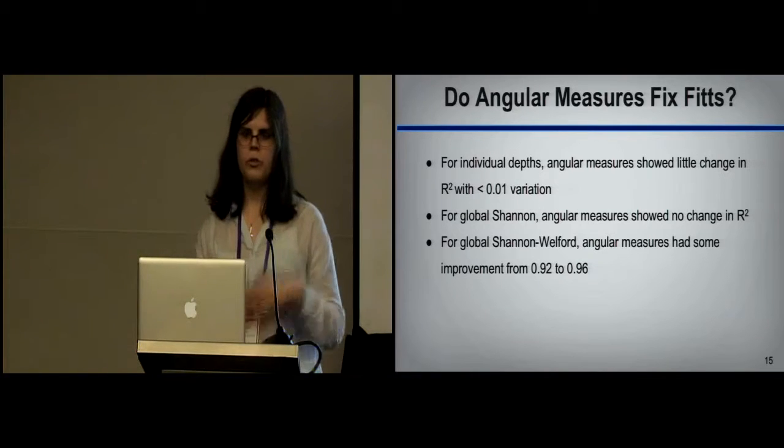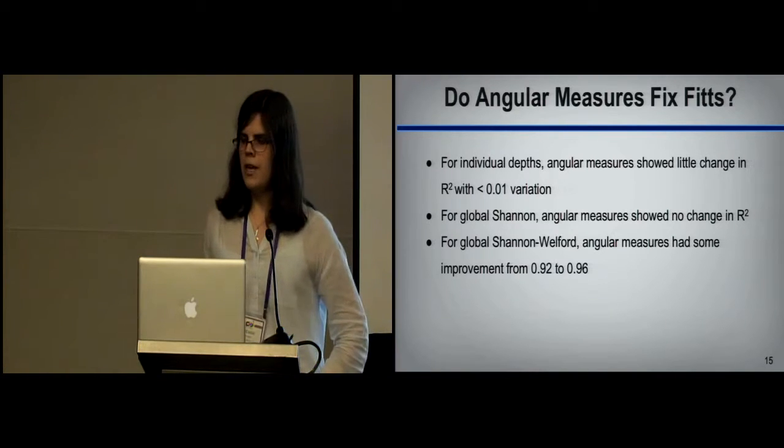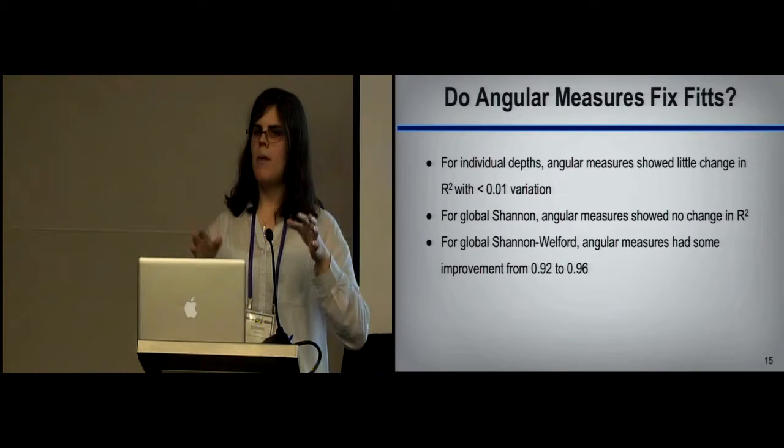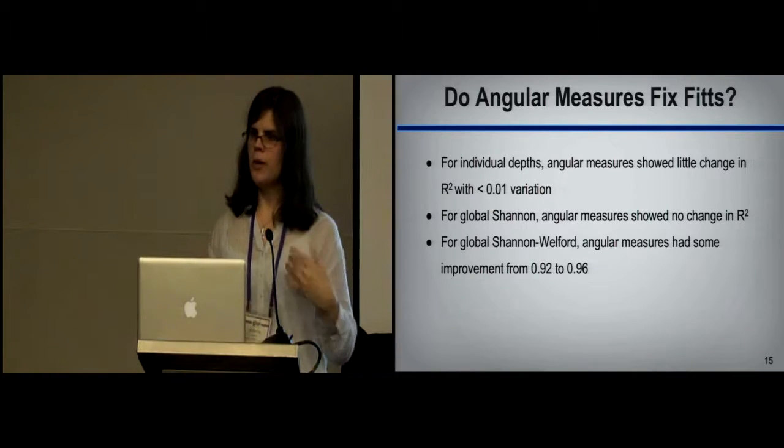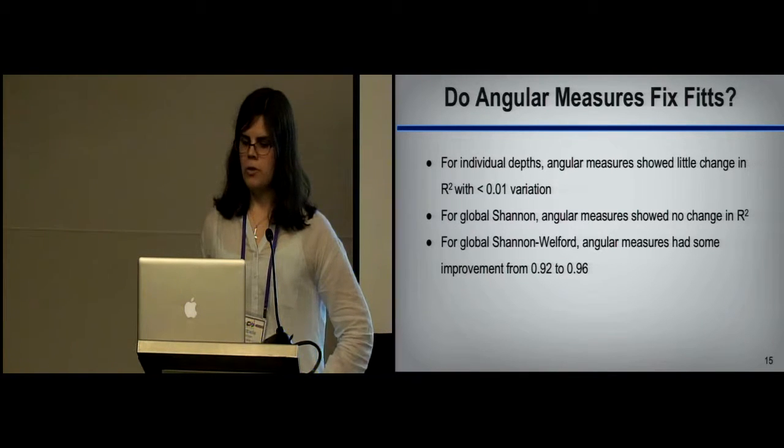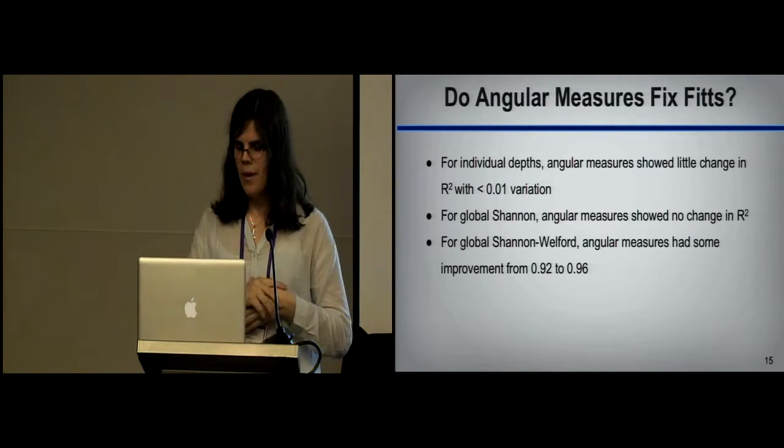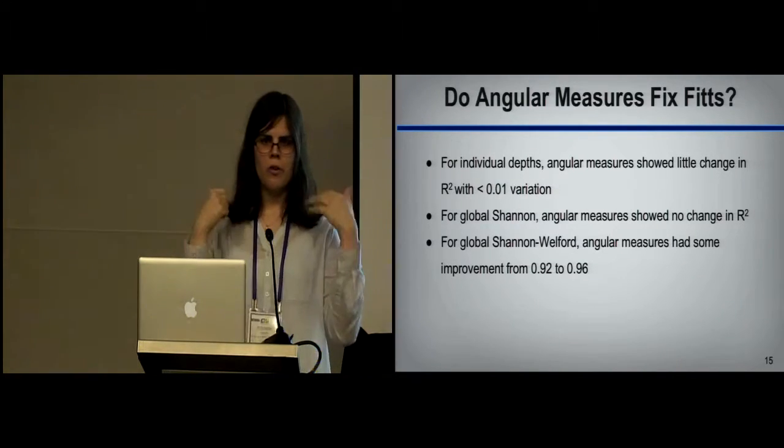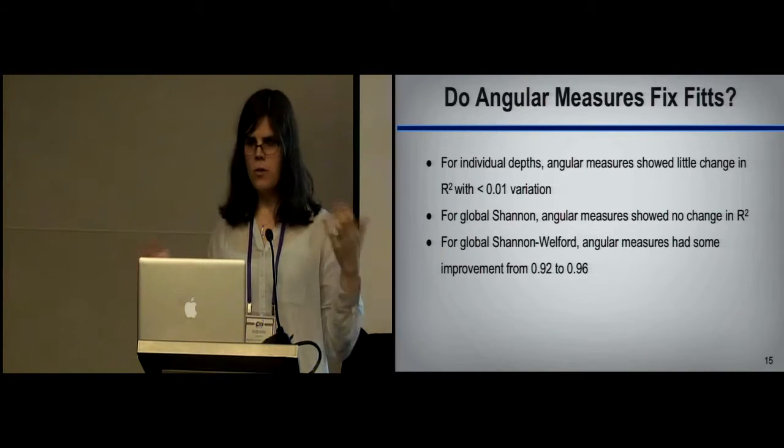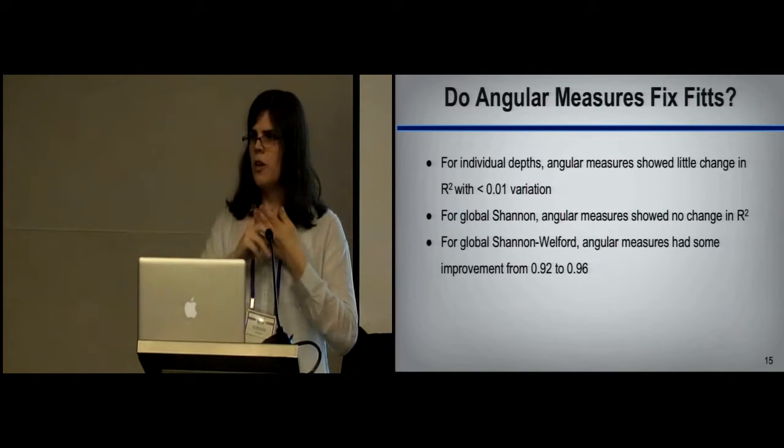We also had that question of whether or not you could just use angular metrics of target difficulty to improve your one-part models. This was really kind of interesting and surprising to us. We tried just using a standard Fitts one-part model and just plugging in the amplitudes and widths and angles and we literally had to round off the changes in R squared. You saw some changes in the exact values of the coefficients, but they were really modeling the same data. You're getting the same results out of them either way. Now, having said that, for specific distances, that's not surprising, right? It's supposed to try and model multiple distances at once. We ran the global condition and for Fitts, for Shannon, for Welford, we saw really no difference still. We saw like maybe .1 or .01 or something.